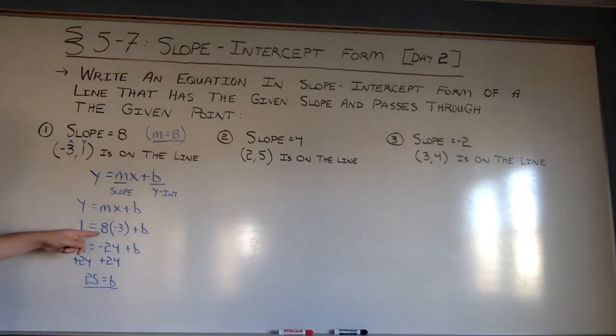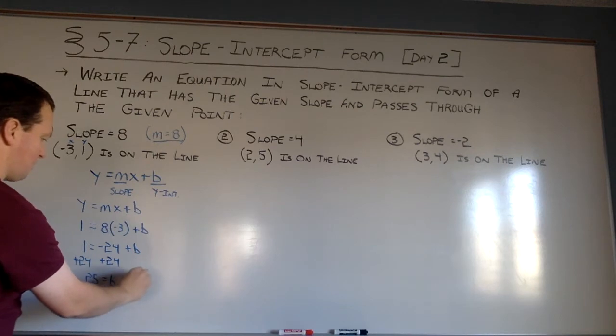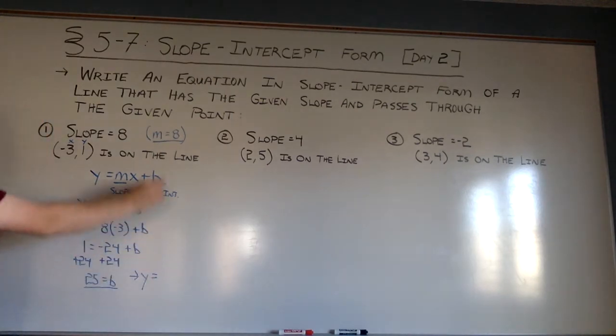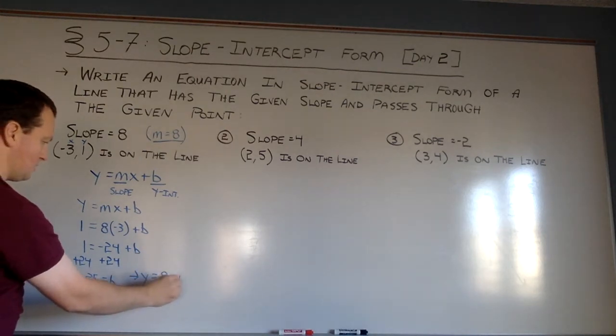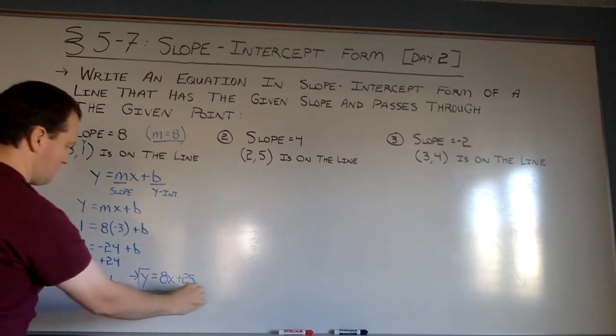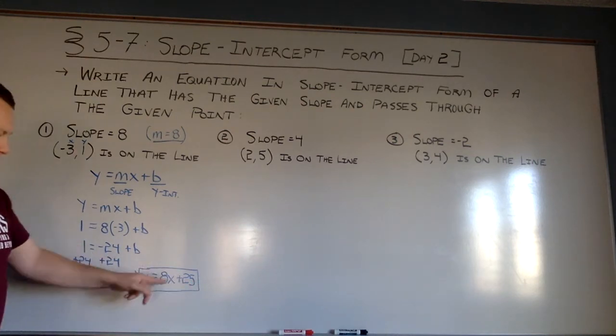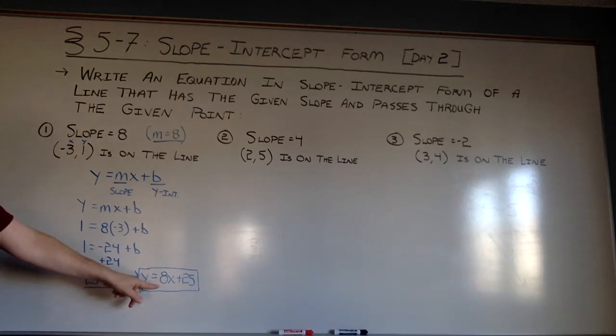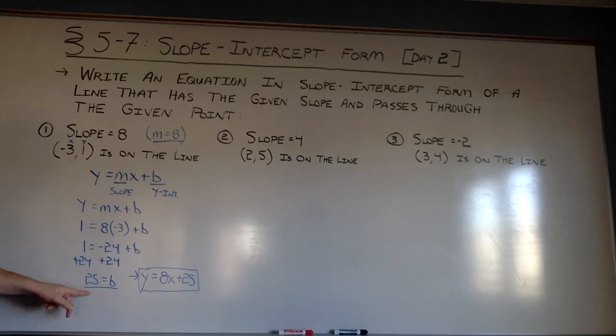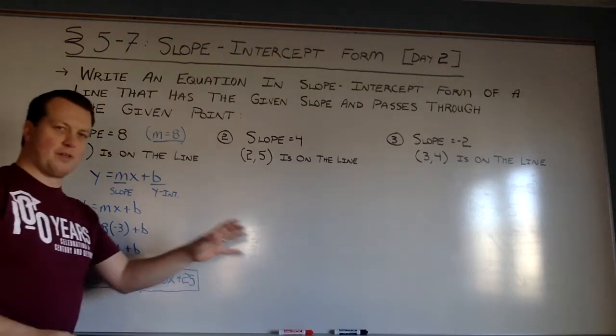So I've got now m is 8 and b is 25. So my final equation then in slope-intercept form is y equals 8x plus 25. So to wrap it up in a couple steps, you are going to plug in the given m value and the given x and y value into y equals mx plus b, solve for b, and then write your final equation with the given m, the given slope value, in for m, the slope, and the given b value that you found using algebra to find the y-intercept. Let's see if we can do that with a couple more. And that's it for today.